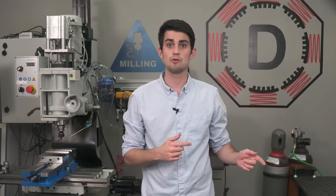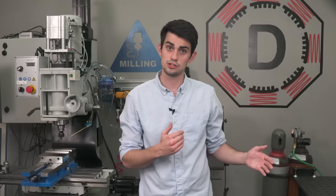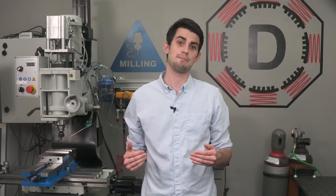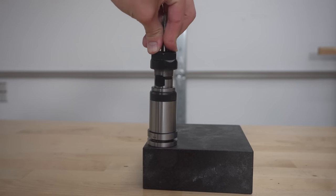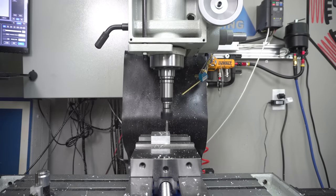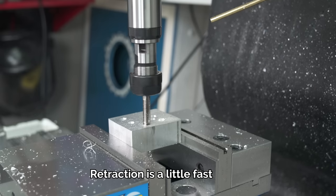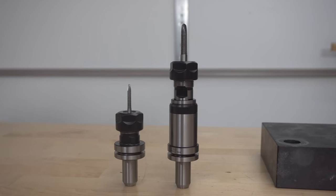However, before we start that upgrade, I want to point out that the last two ways of creating internal threads on a CNC mill, tension compression tapping and thread milling, do not require spindle synchronization and can be performed on my mill in its current configuration. Tension compression tapping uses a special tool holder that soaks up any discrepancy between the actual feed rate of the mill and the RPM that the spindle is turning. This holder allows the tap to self-moderate the rate at which it pulls itself into the material. The only real problem with this method is that these bulky tool holders take up a lot of your Z axis clearance and are costly.